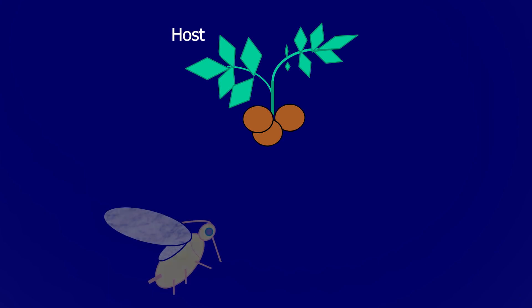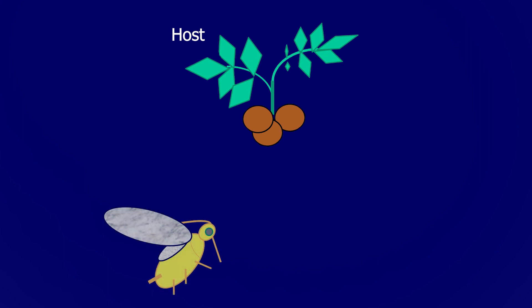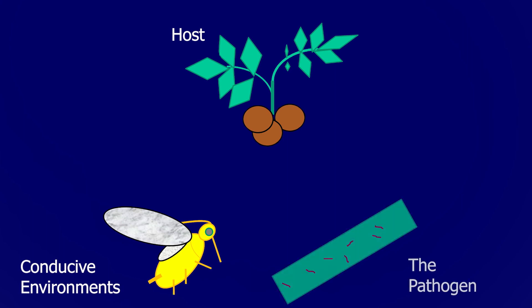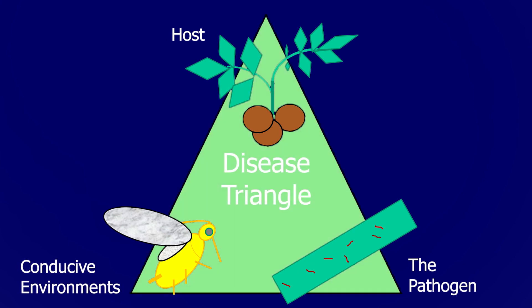Disease outbreaks happen when three elements come together: a suitable host — in our case potatoes and possibly some other plants — a conducive environment including aphid vectors, weather, and landscape, and the pathogen itself, including which strains are present and where they reside. Interfering with one or more of these elements will prevent the spread of the disease.